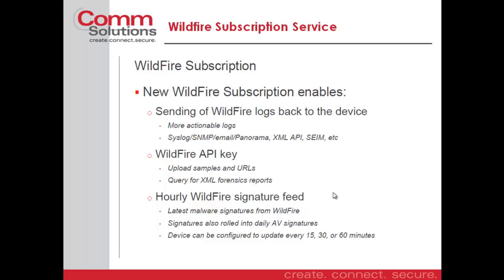We get availability for syslogging, SNMP traps, email, and Panorama for logging and alerting for these events. We also get access to an API key that allows us to upload samples and URLs of our own to be interrogated in the WildFire cloud. The subscription service then gives us a guarantee of the hourly WildFire signature feed, and we can selectively pick the increment on how often we want to check for new signatures.